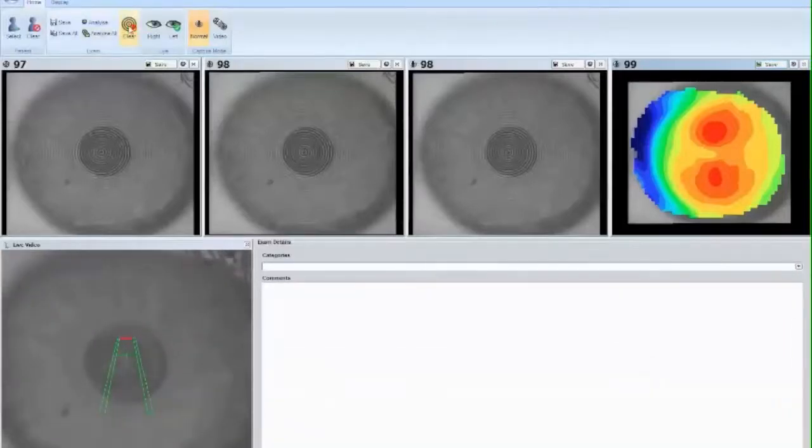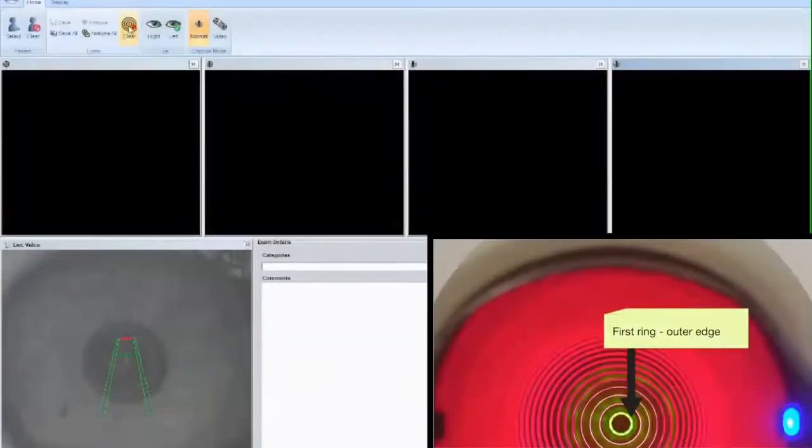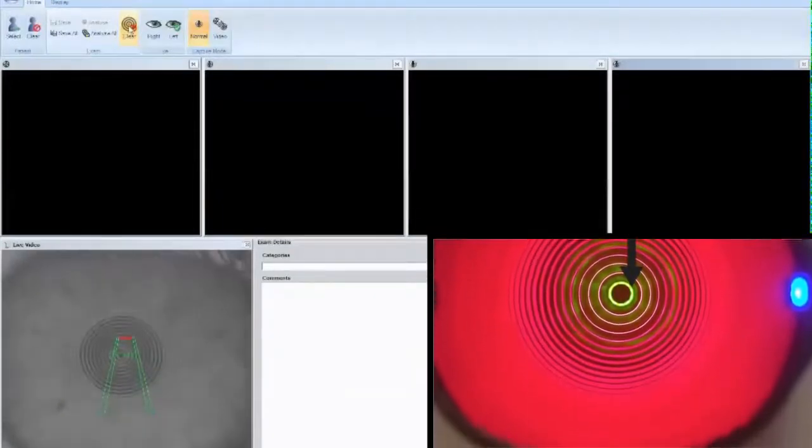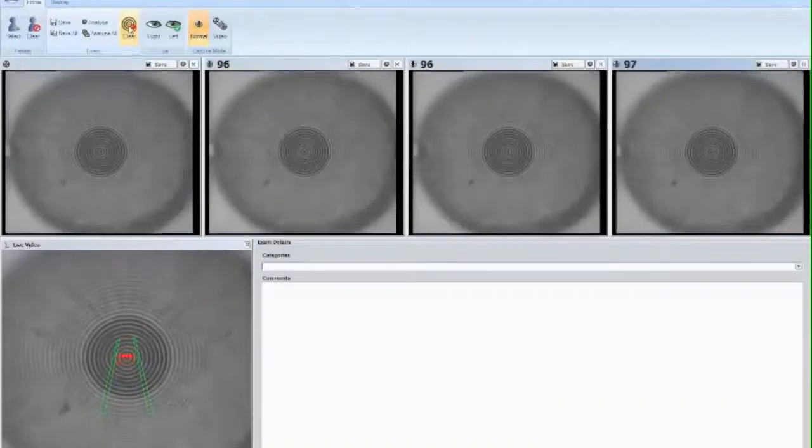If we ask the patient to look at the outer edge of the first ring towards the nose, we see the mires are a bit better, but not aligned within the limbus.